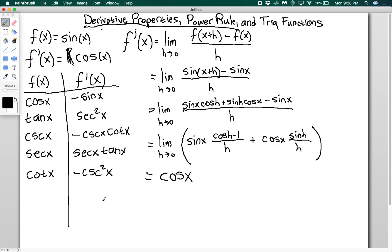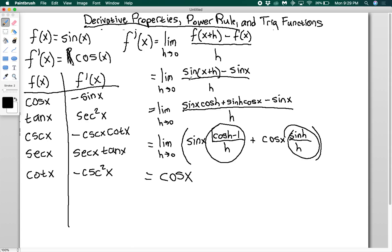Now you know how to take the derivative of polynomial functions using the power rule, and also how to take the derivative of trig functions. The general approach is: plug in, expand using trig identities, then apply limit rules to simplify and get a nice answer. Once you have these results, you no longer need the limit definition — if you see cosine x, you just know it's negative sine x. You'll use sine, cosine, and tangent so often they'll become second nature. Same with power rule — you'll do it so frequently it becomes almost automatic, like addition or multiplication tables. Thanks for watching.